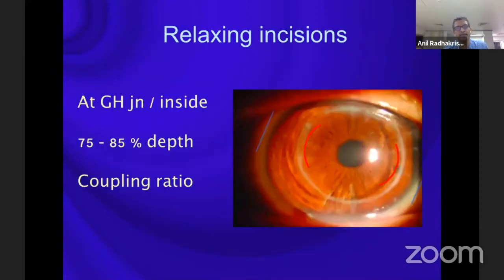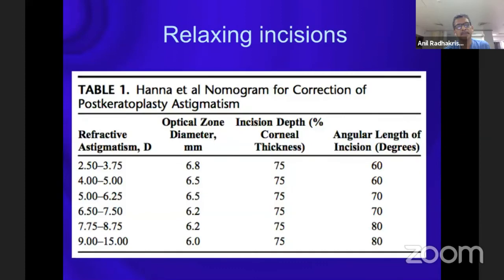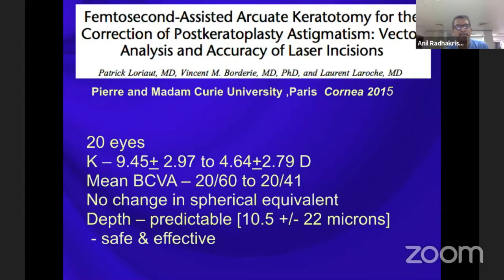Another approach is relaxing incisions, but limbal relaxing incisions obviously don't work — they have to be placed inside the graft-host junction, which represents the second limbus in a patient with penetrating keratoplasty or deep anterior lamellar keratoplasty. The incisions must be at 75 to 85% depth, and we have to factor in the coupling ratio. Hanna's nomogram is the one most commonly used for treating post-keratoplasty astigmatism.